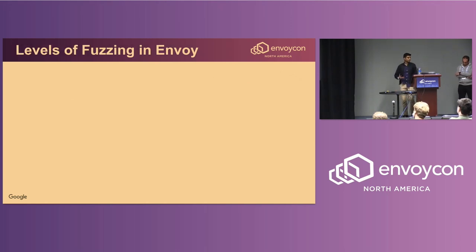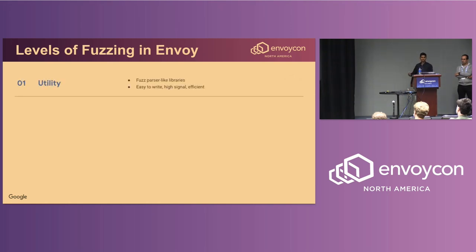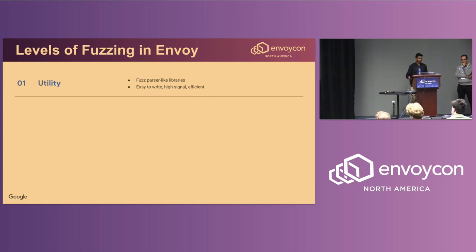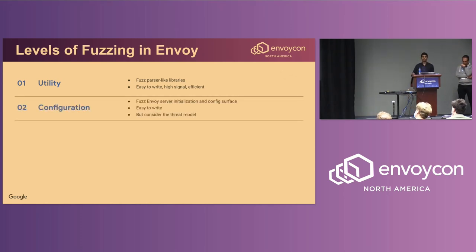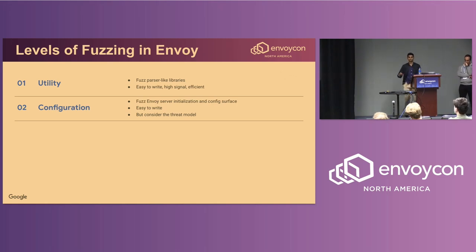Now we know what targets to fuzz in Envoy, but before writing your own fuzzer you should understand the type of target, because the type of fuzzer might change. First, we have utility fuzzers — these fuzz parser-like libraries such as the access logger walkthrough we just did. These are easy to write, very efficient, very fast, and high signal. We recommend that 100% of utilities have fuzzers in our repo. The second type is configuration fuzzers, which focus on fuzzing just the config surface like server initialization and XDS inputs. These are also easy to write but may be lower priority given the threat model.